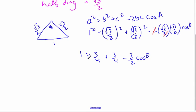If I multiply everything here by 4, I can get rid of my fractions. And I know 4 is equal to 3 plus 3 minus 6 cos θ.